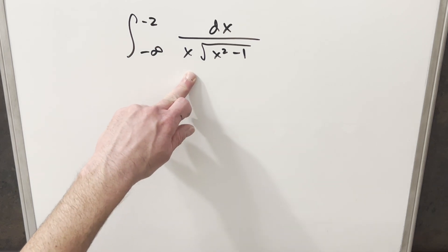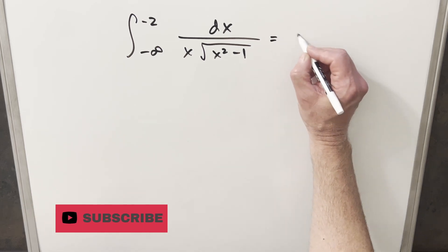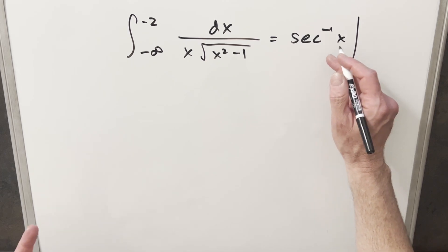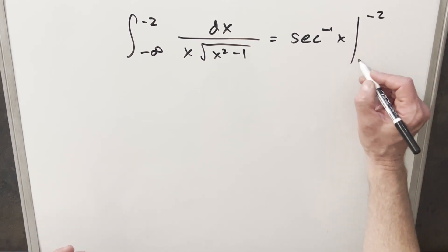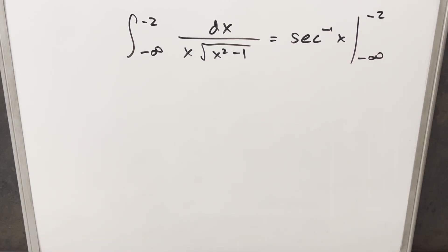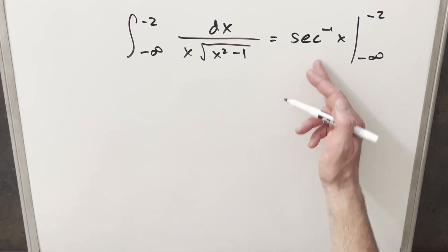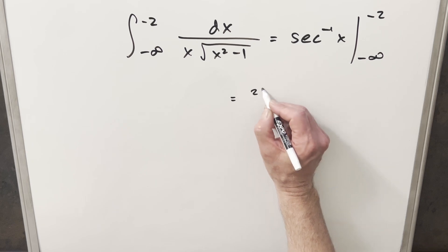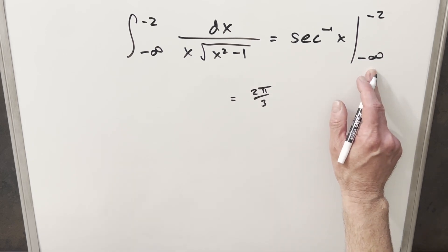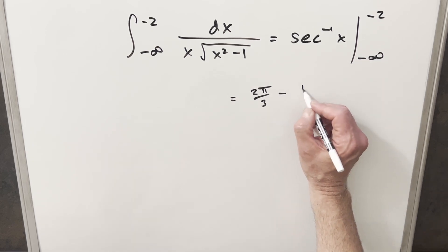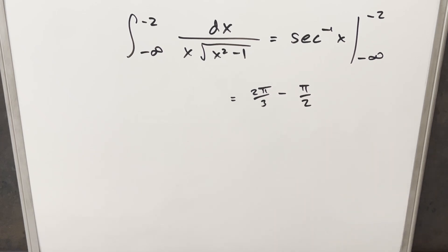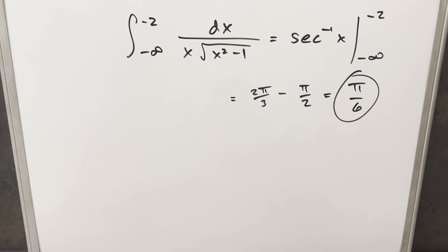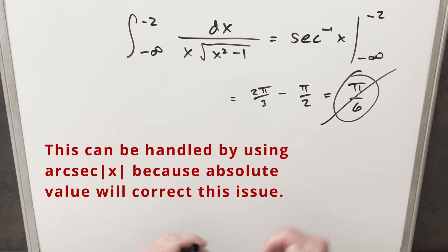You may be familiar with this integral — typically you can just use the formula and say this is inverse secant. But the interesting thing is if we evaluate that with these bounds from minus infinity to minus two, our secant depends on how it's defined. Evaluating at minus two gives two pi over three, and at minus infinity gives minus pi over two, putting that together gives pi over six. But doing it that way we actually get the wrong answer — the answer is not pi over six.